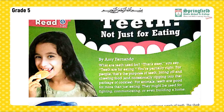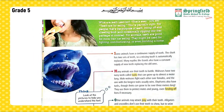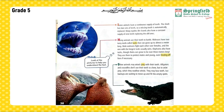Some animals have a continuous supply of teeth. The shark has two sets of teeth, so a missing tooth is automatically replaced. Many reptiles, like lizards, also have a constant supply of new teeth replacing the old ones.